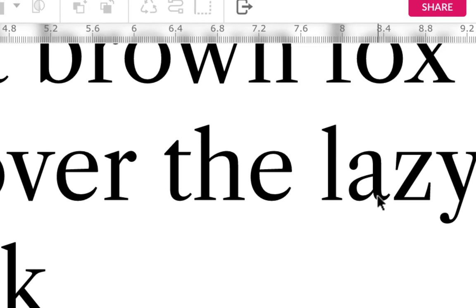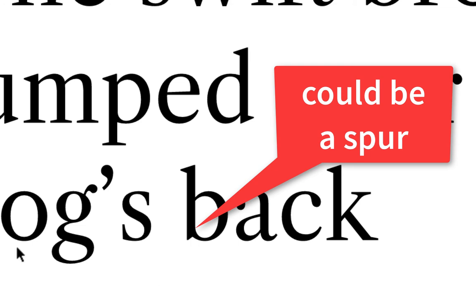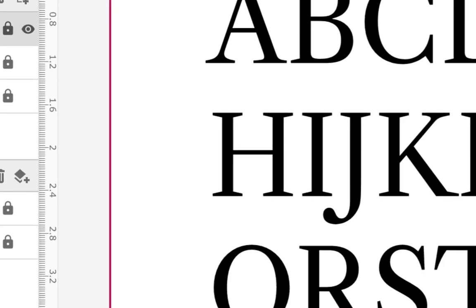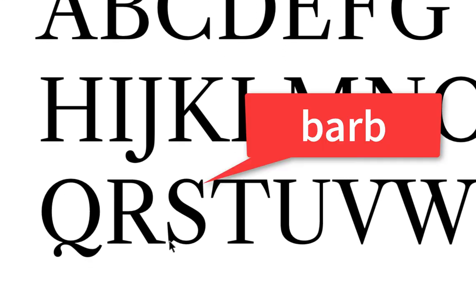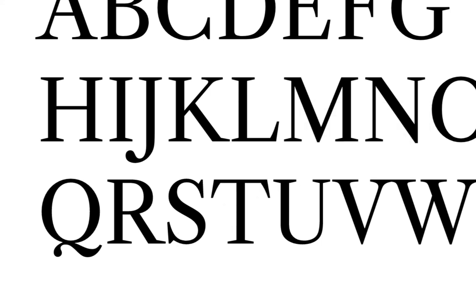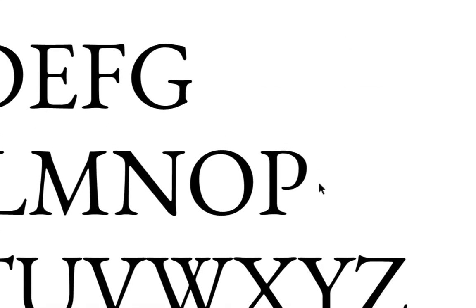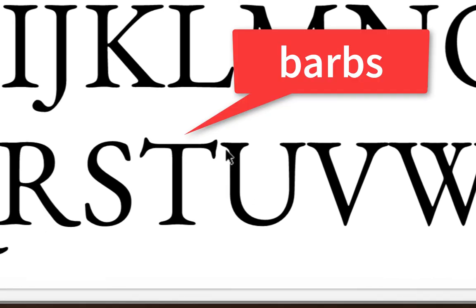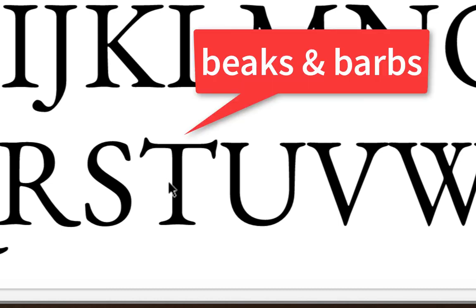You could almost call certain features on letters like 'd' or 'u' a spur as well. On the 'a,' that tapered part is more like a finial rather than a spur. But primarily you see spurs on 'g's — that's the main place. Back to the capital letters: barbs are the little things that stick out from the opposite side of the beak. The 'z' has beaks, and some versions even have a little barb. The 't' has barbs on top of its arm and beaks coming down, which helps identify specific fonts.